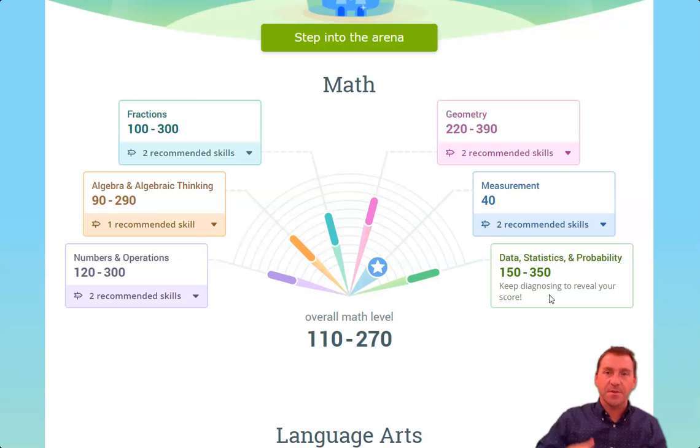questions get harder, questions get easier, they get some right, they get some wrong. It continues to learn the student and says, whoop, red flag, hey, I have a recommended skill that would help you in the area of algebra and algebraic thinking. But over here, I haven't found something yet for data and statistics and probability. You're doing okay from what I've given you so far.